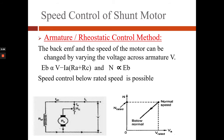Now we will see the rheostat control method. By varying the value of R we can vary the voltage V that appears across the armature. Since the speed N is directly proportional to armature voltage, it is possible to change the speed by changing the value of the rheostat.